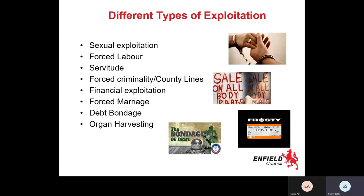Financial exploitation can involve benefits falsely claimed by perpetrators on behalf of workers, bank accounts opened in victims' names but used by perpetrators, or workers' wages paid directly to exploiters. Forced marriage is marriage without consent — it's not the same as arranged marriage, where both parties consent. Forced marriage can happen for reasons such as citizenship, domestic servitude, or to repair debt. We have heard of these situations happening with quite young children.